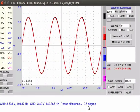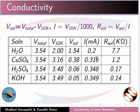Using the voltage values, we have calculated the resistance of ionic solutions and tabulated the results. Resistance value for tap water is 7.7 kilo ohm. For copper sulfate solution it is 1.2 kilo ohm. For sulfuric acid solution it is 0.17 kilo ohm. And for potassium hydroxide solution it is 0.14 kilo ohm. Notice that resistance value decreased with the increase in ionic concentration.